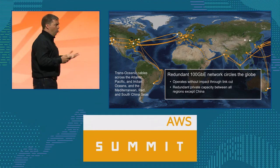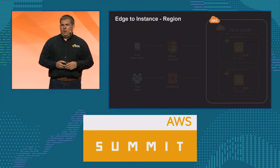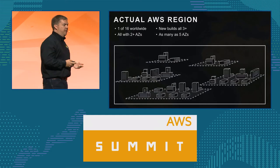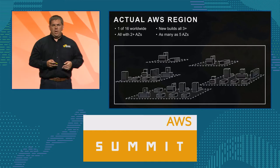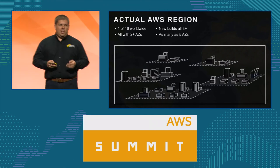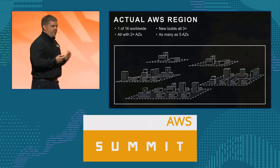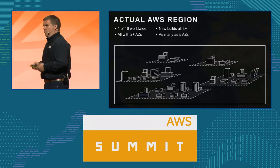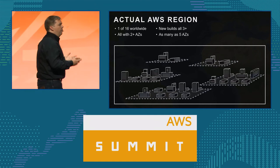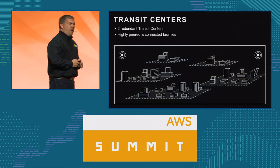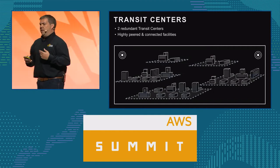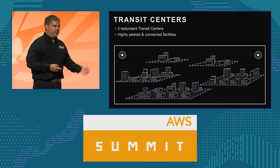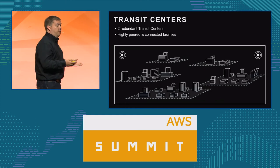Now that we've got our traffic to the AWS region, what happens here? This is one of the 16 regions around the world. Within that region we have availability zones. All of our regions have at least two availability zones, and new builds are probably always going to be three — that seems to be the right number. Some regions have many more than three. Two other important things inside an AWS region are the transit centers. The transit centers provide connectivity to the rest of the world: to the Amazon Global Network, to our peers, to our transit providers, and over that global network to our Direct Connect locations as well.